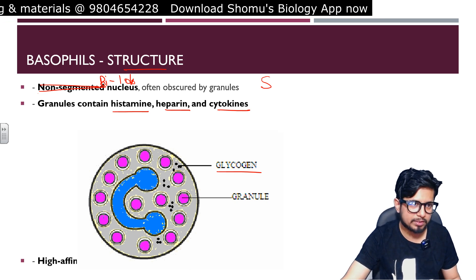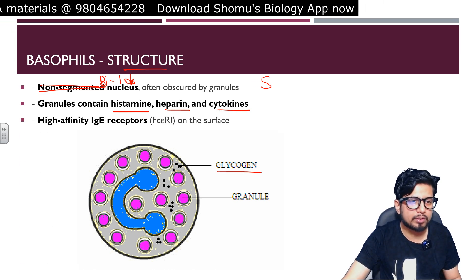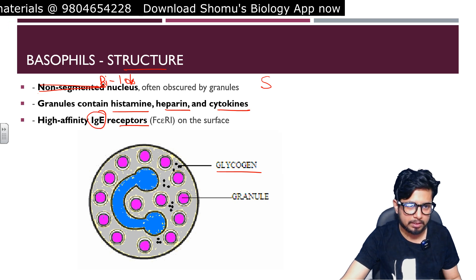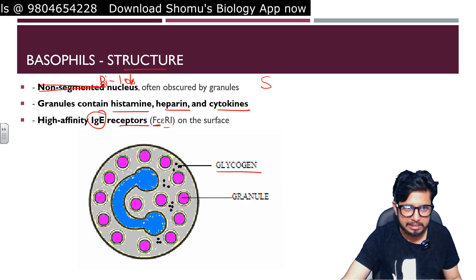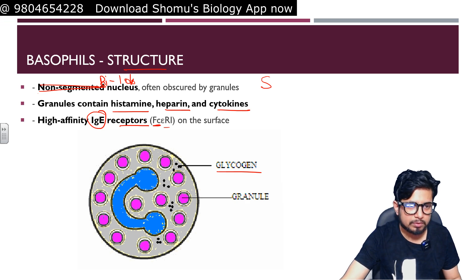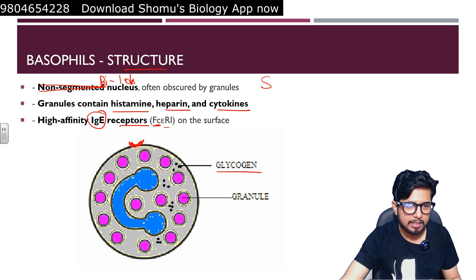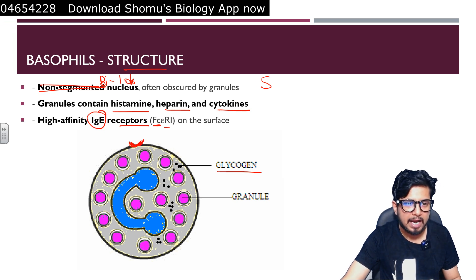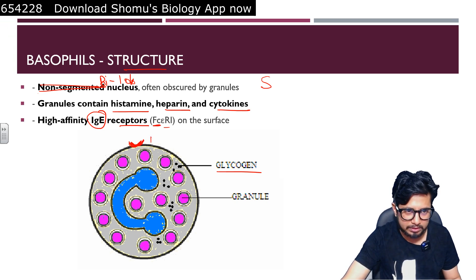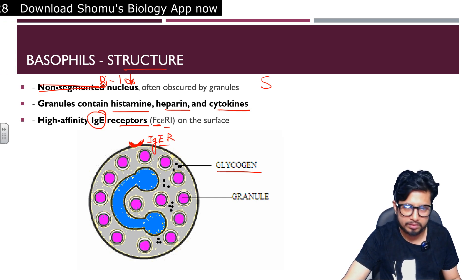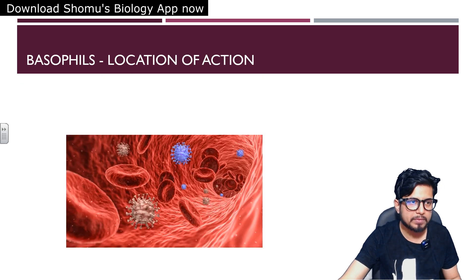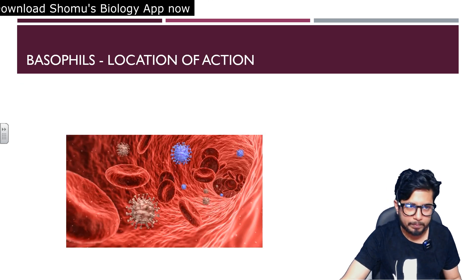Basophils have a high affinity for the IgE receptor, that is the Fc epsilon receptor for IgE, present on their surface. This receptor on the surface of the basophil is where IgE antibodies bind.